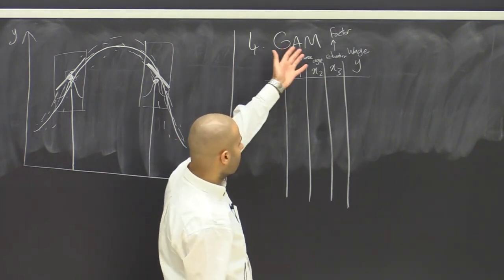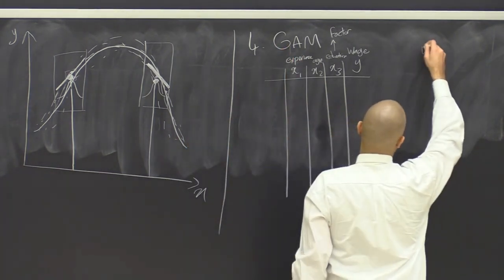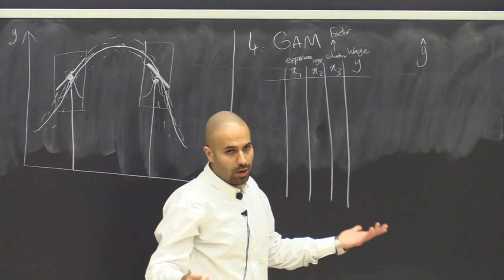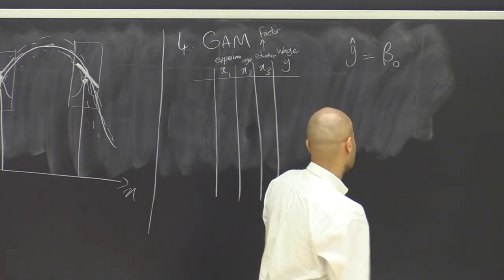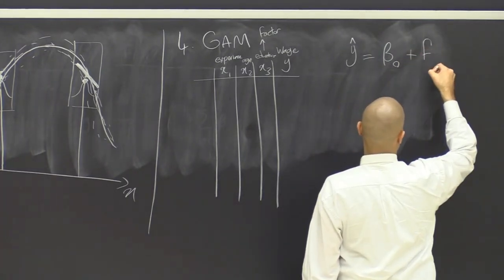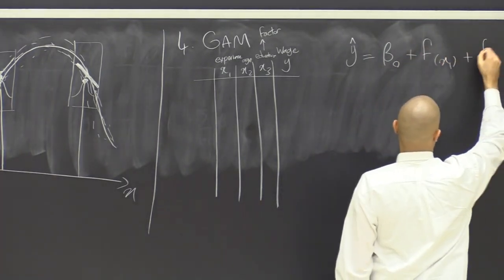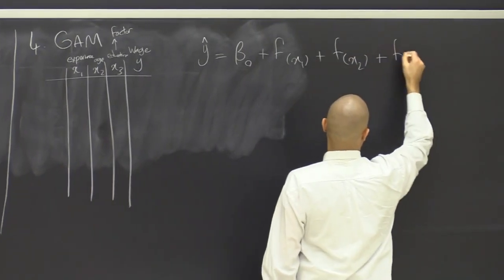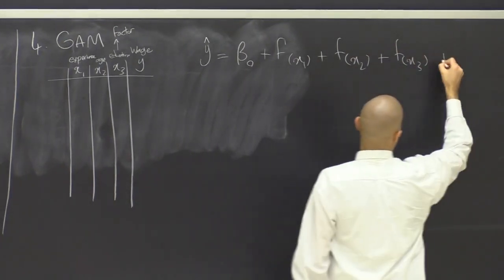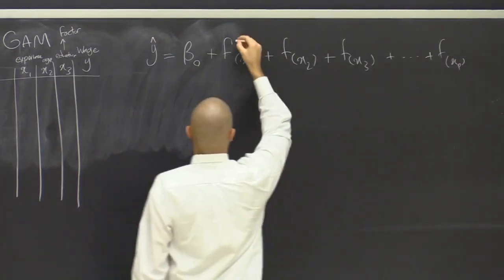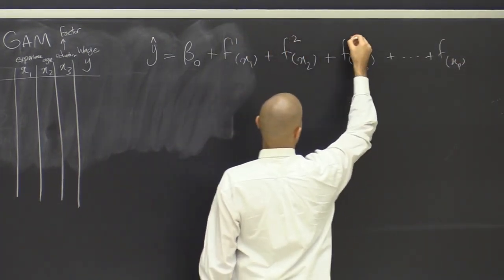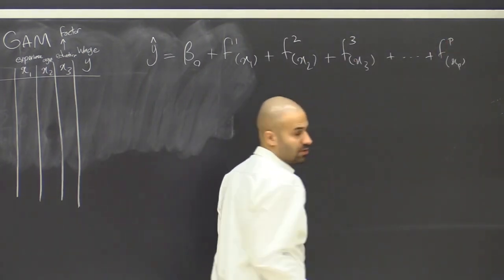So a generalized additive model allows us to capture nonlinear patterns if we want, as well as linear patterns. So it's going to be some intercept plus some function of x1, some function of x2, some function of x3, all the way to the number of predictors that we have. So if you have p predictors, this is like some f1, this is some f2, this is some f3, and this is some f superscript p.